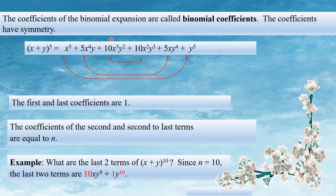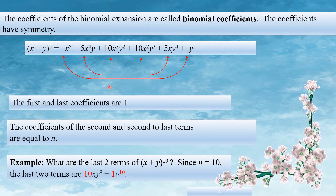The coefficients of the binomial expansion are called binomial coefficients. The coefficients are symmetric. If we expand this, we can see the coefficients: 1, 5, 10, 10, 5, 1. Here x raised to 5 and y raised to 5 have the same coefficient. The first and last coefficients are 1, and the coefficients of the second and second-last terms are equal to n.